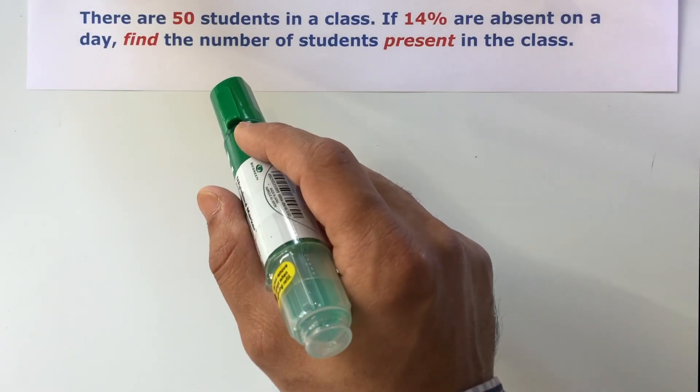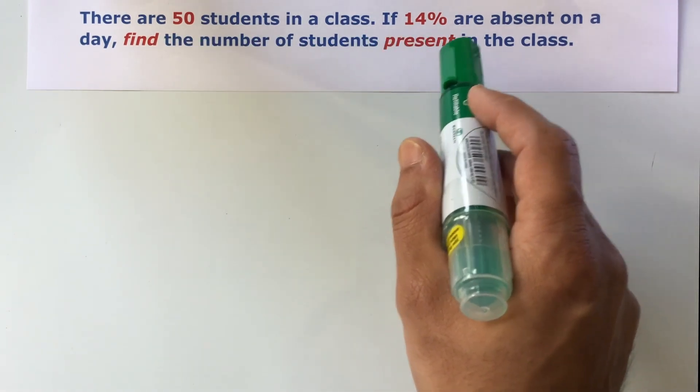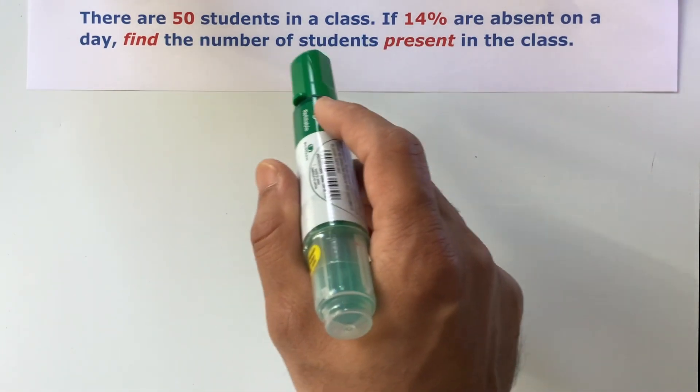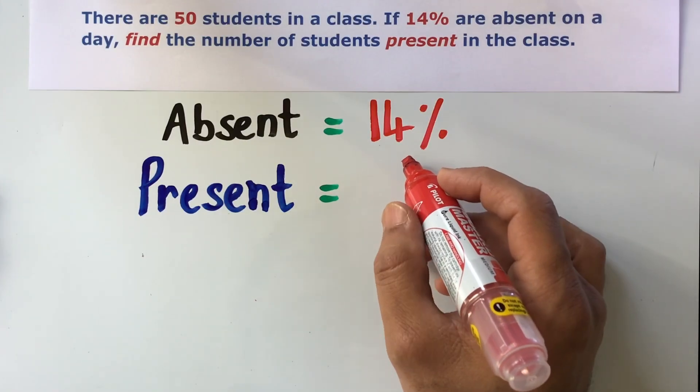Now, let us try to solve this word problem. It says, there are 50 students in a class. If 14% are absent on a day, find the number of students present in the class. Since 14% of the students were absent,